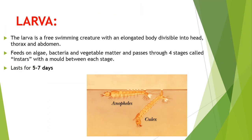The larval stage: the larva of a mosquito is a free-swimming creature with an elongated body divisible into head, thorax, and abdomen. Usually the larva feeds on algae, bacteria, and vegetable matter, and passes through four stages called instars, with a molt between each stage. This stage usually lasts for five to seven days.